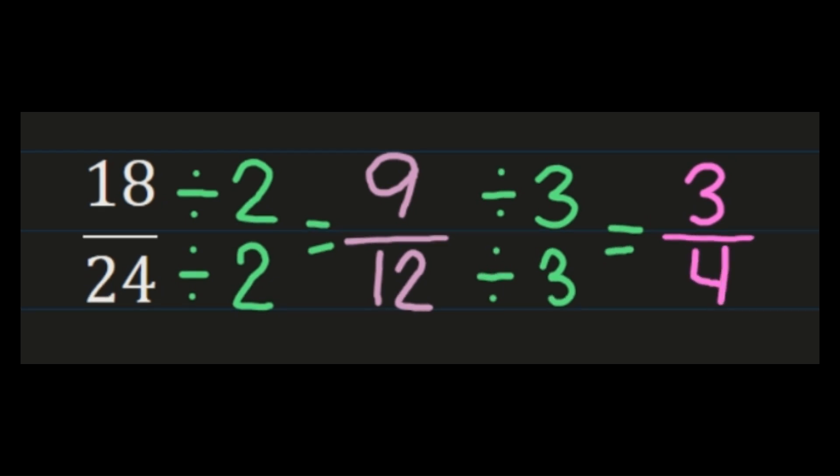So now you have three-fourths. And again, you need to stop and ask yourself, can I continue simplifying? Well, three and four don't share any common factors, so you're done with your simplifying steps at this point. So eighteen twenty-fourths simplifies to three-fourths. So the one thing to keep in mind if you're not going to use the greatest common factor is to always ask yourself, am I done simplifying?